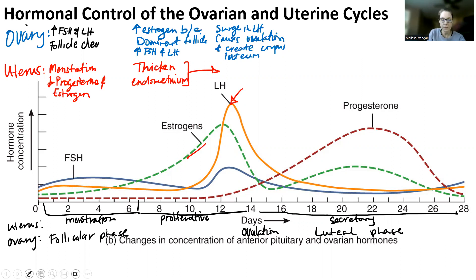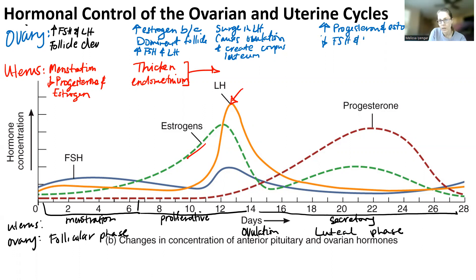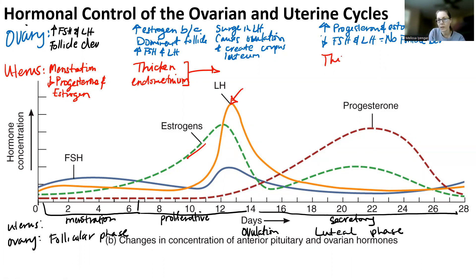Now we're going to be in the luteal phase. What you're going to see is progesterone and estrogen increasing. You should see a decrease in FSH and LH, because progesterone is high and so is estrogen — that feeds back negatively to turn these two hormones off. What's happening in the ovary equals no follicle development. The most important thing is you target the endometrium and thicken and maintain the endometrium.